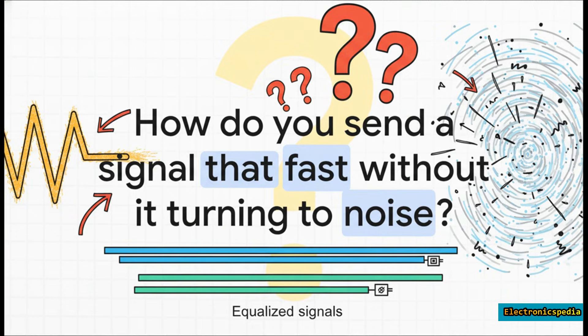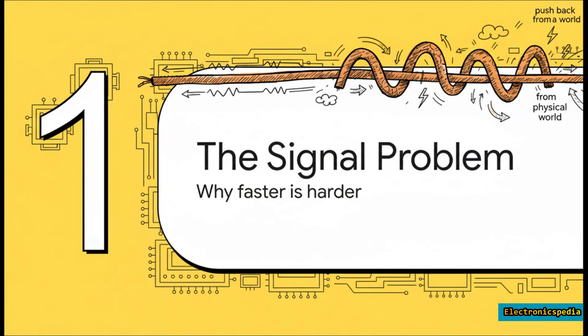But that incredible speed creates an equally incredible challenge. When you're trying to send a signal that fast, switching a voltage 64 billion times a second, how on earth do you make sure the message at the other end is still readable? How do you stop it from just turning into a bunch of random useless noise? That gets us right to the heart of the high-speed signal problem. The faster you try to send data, the more the physical world pushes back.